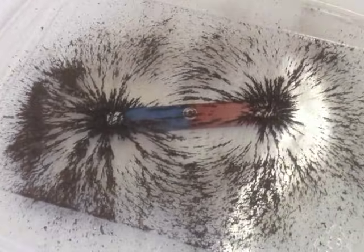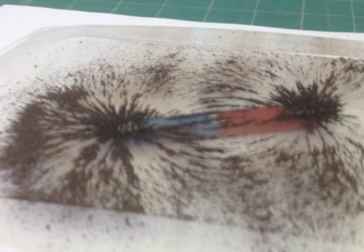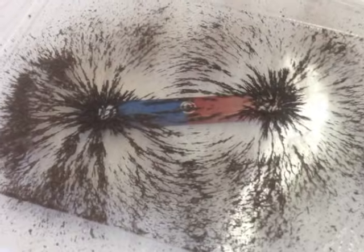When done shaking, make sure kids observe the pattern both overhead and from the side. From the side, they'll observe that the field is three-dimensional, meaning the magnetic field extends in all directions from the north pole and wraps back around to the south pole.